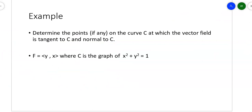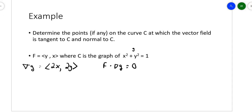Let's look at this example. I want to determine the points, if any, on the curve C — which is the graph of the unit circle — at which the vector field is tangent to the curve and normal to the curve. The vector field is y, x, and that curve is the graph of the unit circle. The first thing is to take the gradient of that curve. The partial derivative is going to be 2x and the other partial derivative will be 2y. If I take the dot product of the vector field and the gradient, I should get zero, because those two things should be orthogonal to each other. The vector field is y, x and the gradient is 2x, 2y.